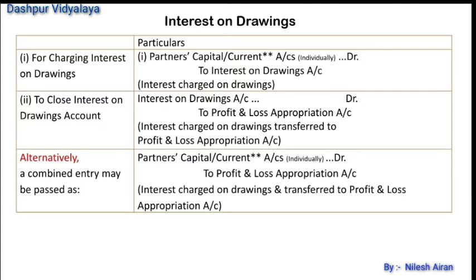Interest on drawings is credited to the partners' capital or current account and debited to interest on drawings account. Then interest on drawings will be transferred to the profit and loss appropriation account: interest on drawings account debit to profit and loss appropriation account. A single journal entry can also be made: partners' capital or current account debit to profit and loss appropriation account.